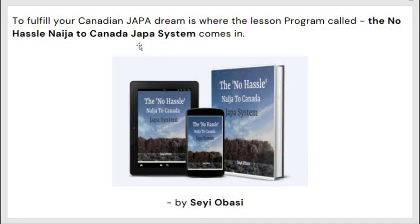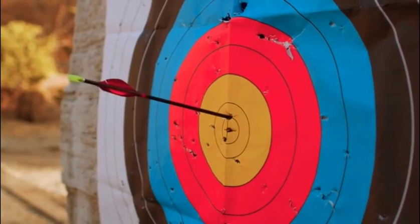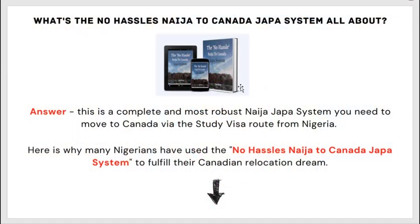To fulfill your Japa Canada dream is where the program called the No Hassle Nigeria to Canada Japa System comes in. If you want to be on the approved side, you need to use a program that has been tested which gives you a breakdown of everything you need to successfully relocate to Canada through the study visa route. This is a complete and robust Nigeria Japa system program you need to move to Canada via the study visa route.